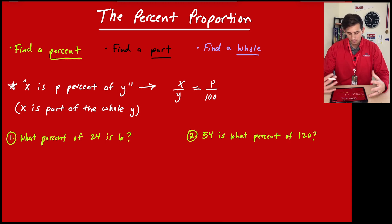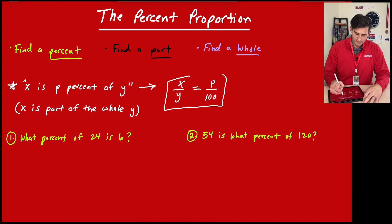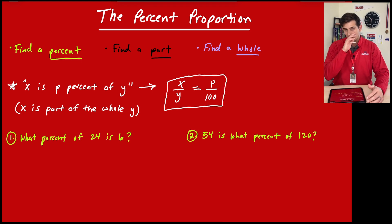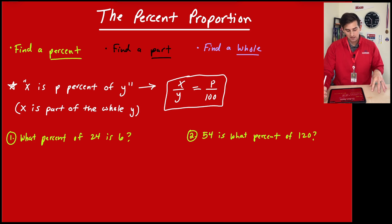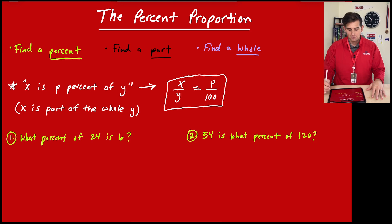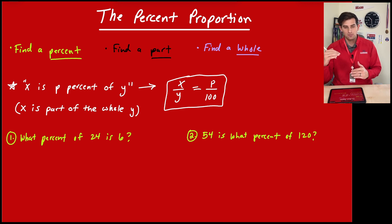We have this proportion: x over y equals p over 100. We can use the statement 'x is p percent of y,' where x is the part of our whole number y. So x over y equals what percent — that's p over 100.